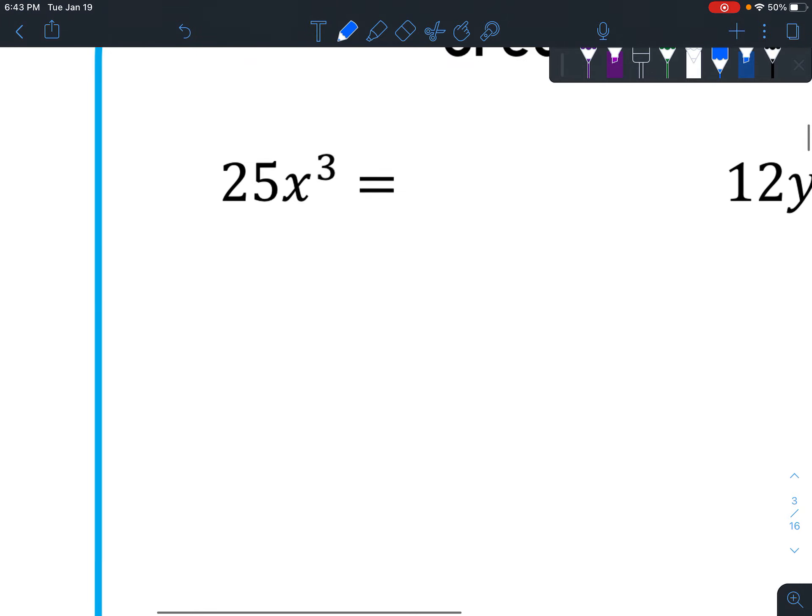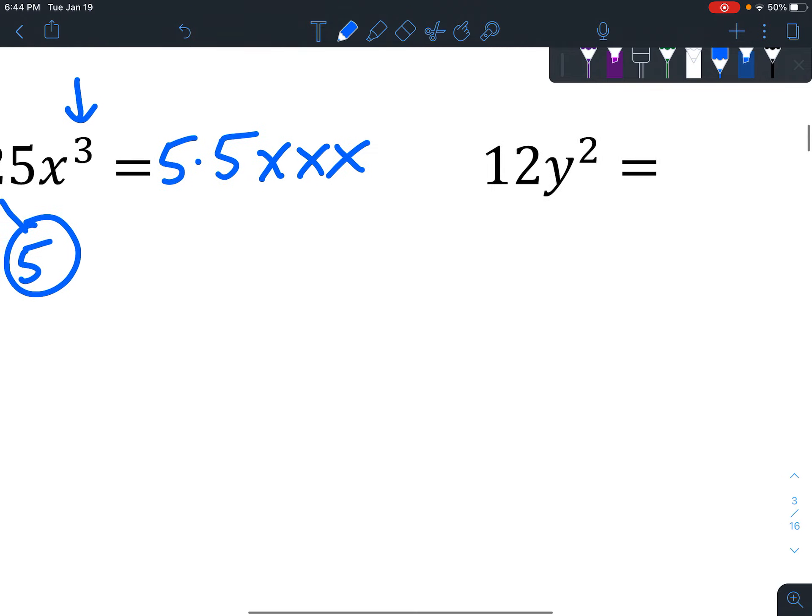Let's look at this one. There should be enough space to just go ahead and factor it underneath. That is 5 times 5. And we've got three x's. So x, x, x.